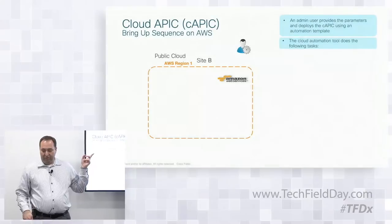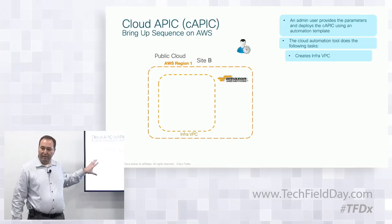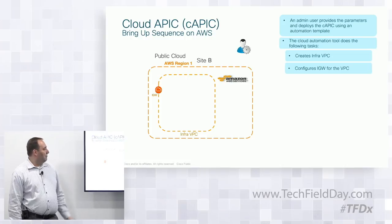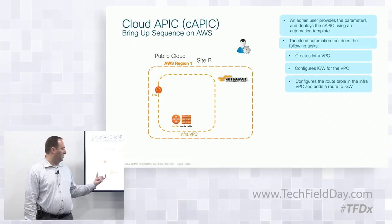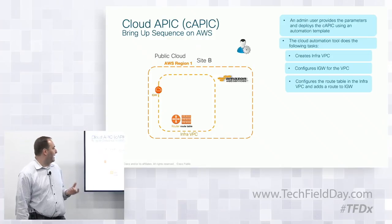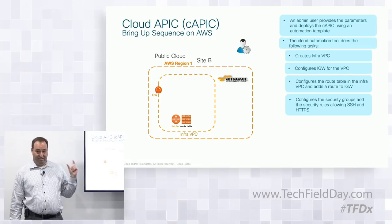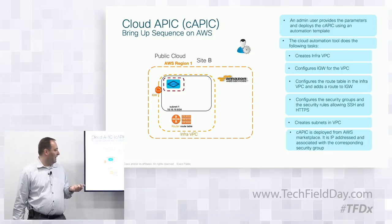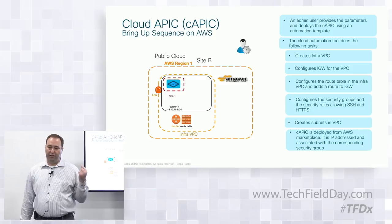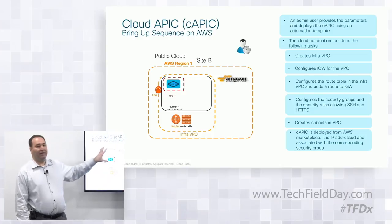The cloud automation tool creates an infra VPC in your AWS region, configures an internet gateway for that VPC, configures the routing table for the infra VPC, configures a security group allowing SSH and HTTPS for the cloud APIC instance, creates the subnets for the VPC, deploys the cloud APIC, and attaches it to that security group so it's ready for HTTPS access. You fill out a two-page form and all of this gets done automatically.